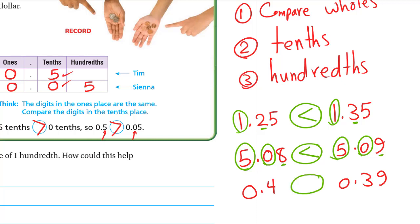One more: compare 0.4 and 0.39. Don't quickly say 39 is bigger — follow the steps. Ones: both zero, same. Tenths: 4 vs 3 — four tenths is bigger! So 0.4 is greater than 0.39. We can also convert: 0.4 becomes 0.40, which is 40 hundredths, and 0.39 is 39 hundredths — so 40 hundredths is clearly greater.